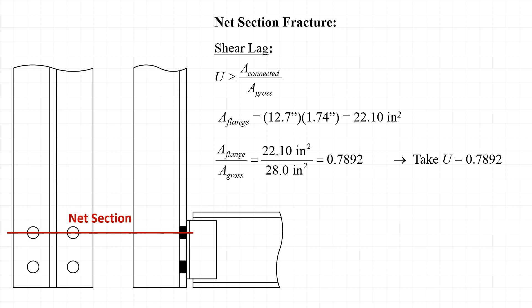That's a significant increase over the original value of 0.46 that we calculated using 1 minus x̄ over L, and this provision reflects the idea that in some cases we might be better off considering only the connected elements of the cross section and not considering the unconnected elements at all.